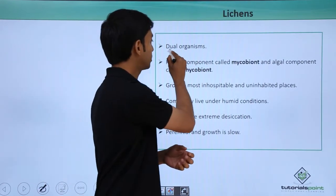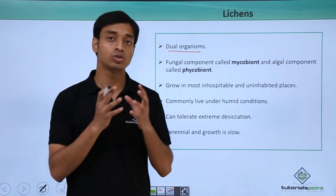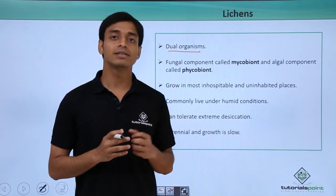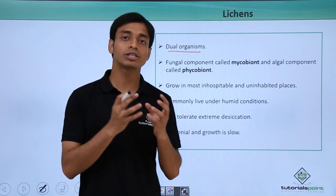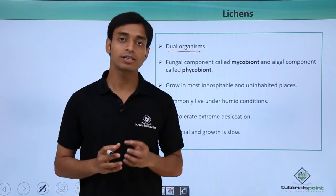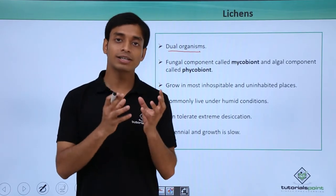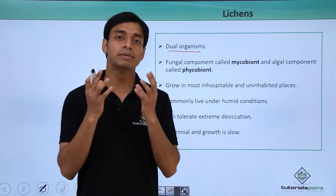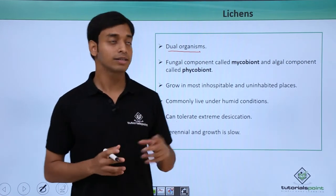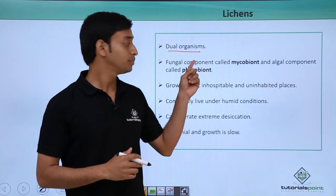These are dual organisms. So why are we calling them as dual organisms? Because these lichens, they are basically a mutual association between two types of organisms — a fungus and an algae. So fungus and algae, they remain in mutual symbiotic association which are termed as the lichens. So they are dual organisms.